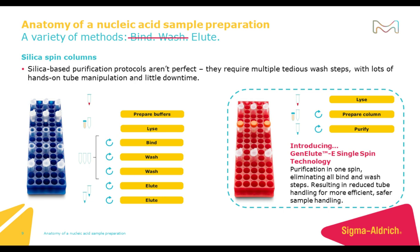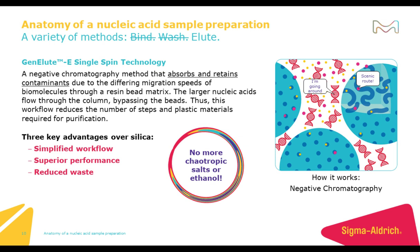Now I get to introduce you to the GenLuE Single Spin Technology, where the nucleic acid is purified in a single spin. This eliminates all of the bind and wash steps, resulting in reduced tube handling and a safer, more efficient way of handling your sample. By using a negative chromatography method it is possible — instead of binding the nucleic acid and running the risk of insufficient binding or non-specific binding, negative chromatography uses size exclusion to fractionate the components of the sample by size, eliminating process biases associated with binding nucleic acids to a membrane or bead.